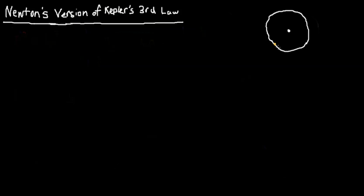These two things — this white dot in the center and this orange dot on the outside — can be anything. This white dot could be a star or a planet, and this orange thing could be either a planet or a moon. But for the purposes of this derivation, we're going to assume that this orange object is a planet and that the inside object is a star. From this diagram, we can discern a couple of quantities that will help us. The most obvious is the distance between the two objects, known in astronomical terms as the semi-major axis, which we'll denote as A.